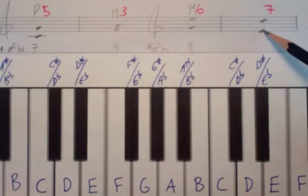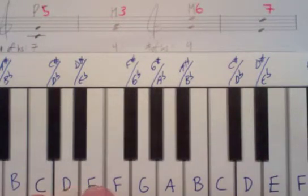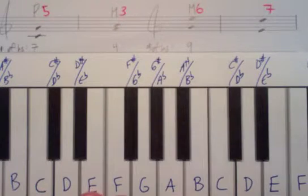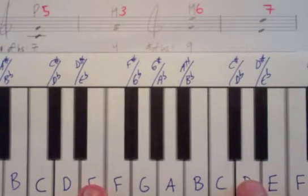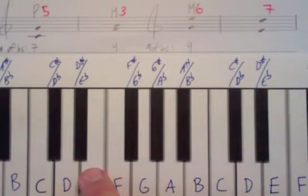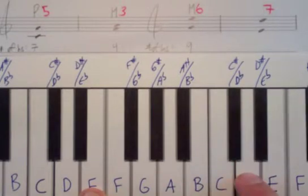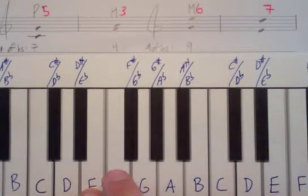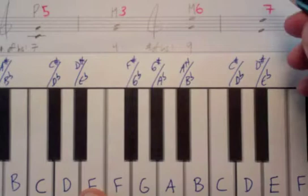Here we have E to D. Remember, we're always going up — so E to D right next to each other would be descending. We want E going all the way up to D. Counting from E to D: one, two, three, four, five, six, seven, eight, nine, ten. So 10 half steps.